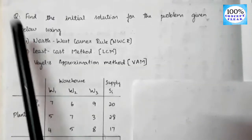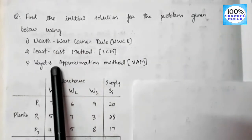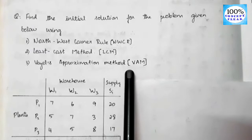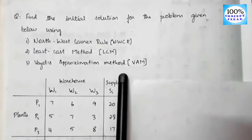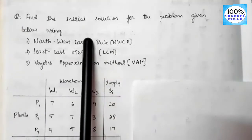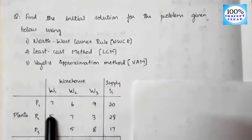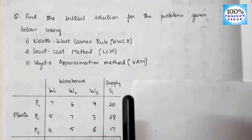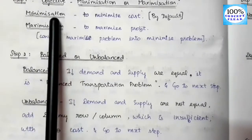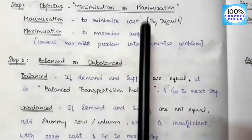Now check the question. We are asked to find the initial solution using these three methods, but we don't have any information about whether it is a minimization or maximization problem. So if nothing is specified about the objective, the problem must be considered as minimization type by default. Therefore all nine elements in the matrix represent cost.